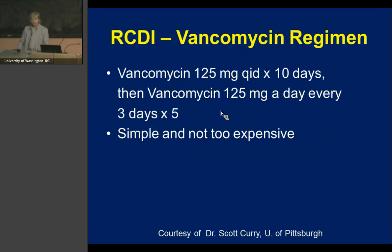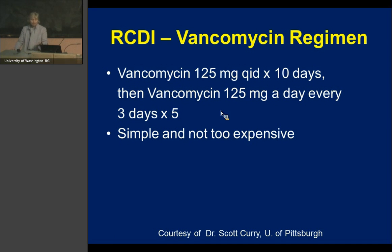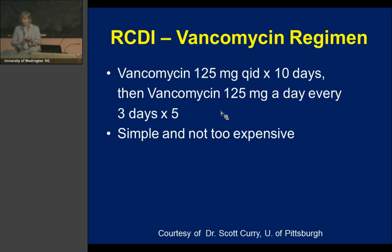A vancomycin pulse regimen from Scott Curry at the University of Pittsburgh: vancomycin 125 milligrams four times a day for 10 days, then a single vancomycin pill every three days for five doses. This is simpler and less expensive than the extended calendar regimens I used to prescribe — skipping two days between single doses and finishing in about two weeks. It has worked in a few patients out of those I've seen with recurrences over the last nine months, which is encouraging.